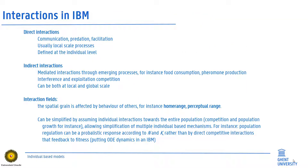Interactions are central to individual-based models. We may recognize first direct interactions — like communication, predation, and facilitation — which usually occur at local scales and are always defined at the individual level. Indirect interactions, often through feedbacks between individuals and the environment, are mediated through emerging processes such as food consumption and pheromone production, and thus explicitly represent interference and exploitation competition. They can be both local and globally acting.